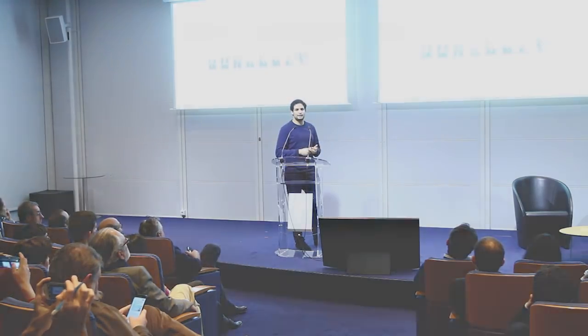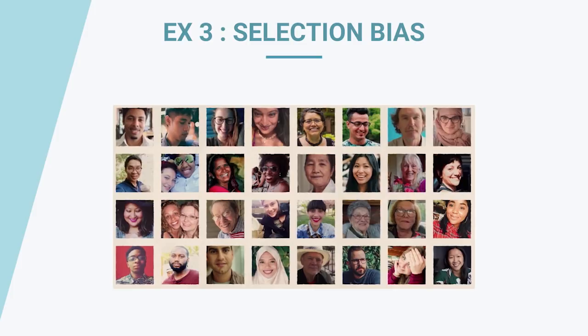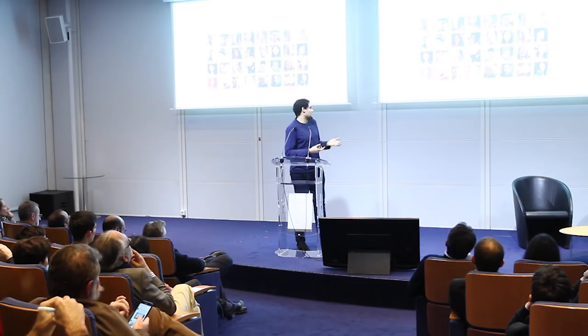Another example of bias is latent bias. If you try to train a classifier on images of scientists from the internet, you will end up with more men than women. Another example is selection bias — when you train on data that isn't truly representative. For example, if you crawl the internet for face recognition images, you'll likely end up with George Bush as the most common face, which isn't representative of the whole population.